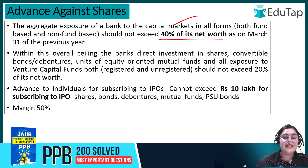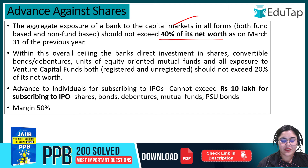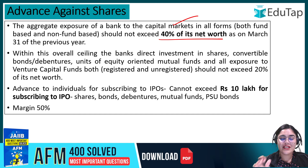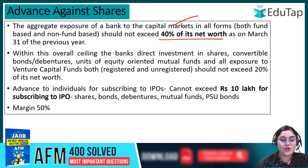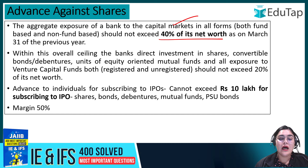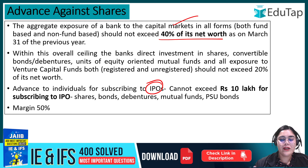Within this overall ceiling, the bank's direct investment in shares, bonds, and debentures, plus exposure to venture capital funds — whether registered or non-registered — should not exceed 20% of the bank's net worth. This applies whether investing in venture capital funds or in IPOs — initial public offers of shares or bonds.